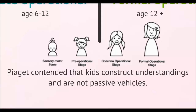Piaget contended that kids construct understandings and are not passive vehicles. A teenager's developing ability to reason gives them a new level of social awareness and moral judgment. For early teens and young adults, their reasoning is self-focused — thinking that their private experiences are unique, assuming parents can't understand, and focusing on peers for advice and support. Imagine when their Facebook network is massive, the conflicting advice that they receive.